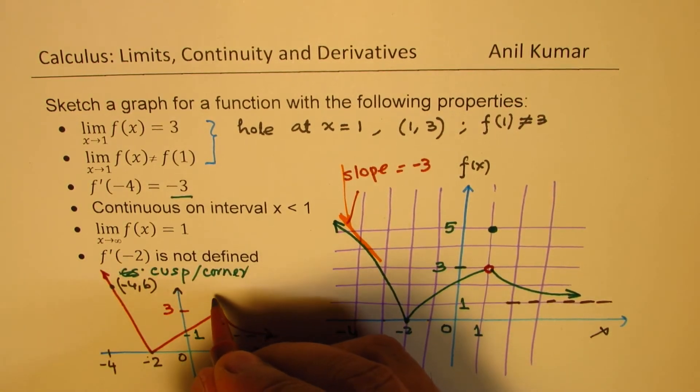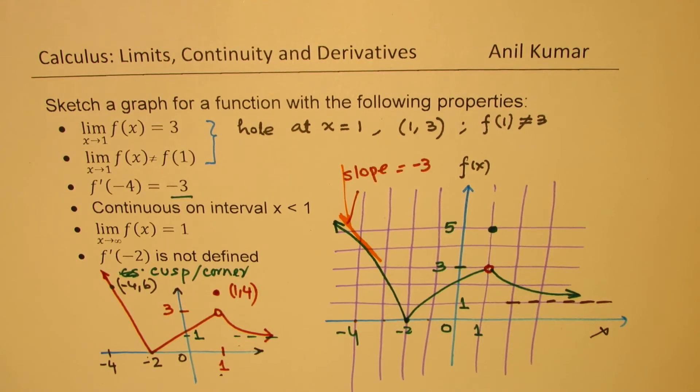You can place some point somewhere here as the value. Let's say we call this as 1, 4. So that becomes the value of the function at 1. Perfect. The condition, basically, is that the function is continuous when less than 1. After 1, it doesn't say much. So therefore, you may or you may not place this point. So that is an option.